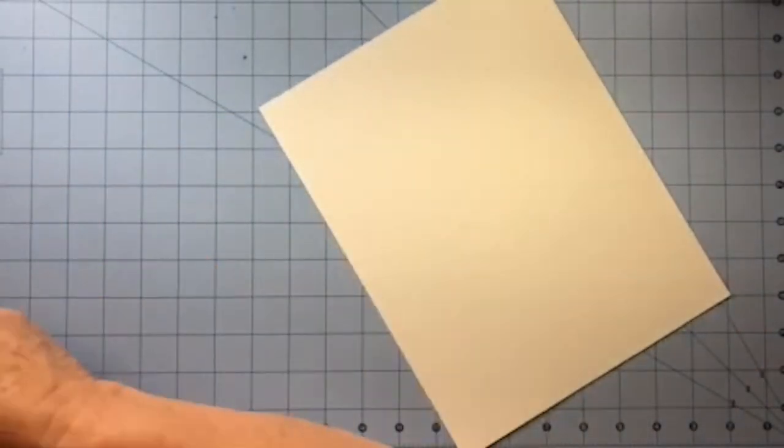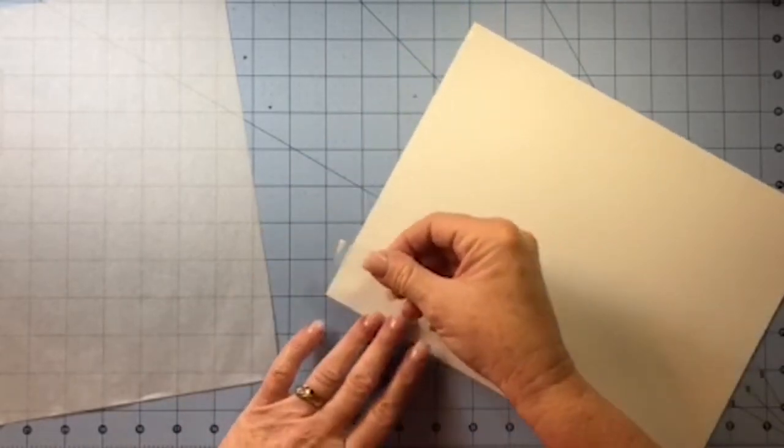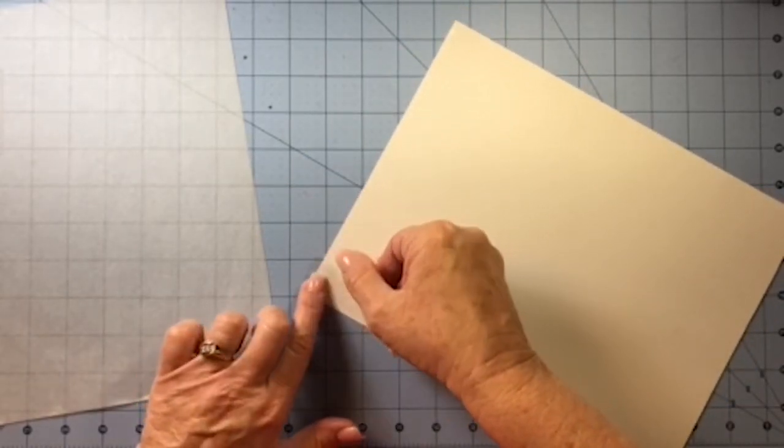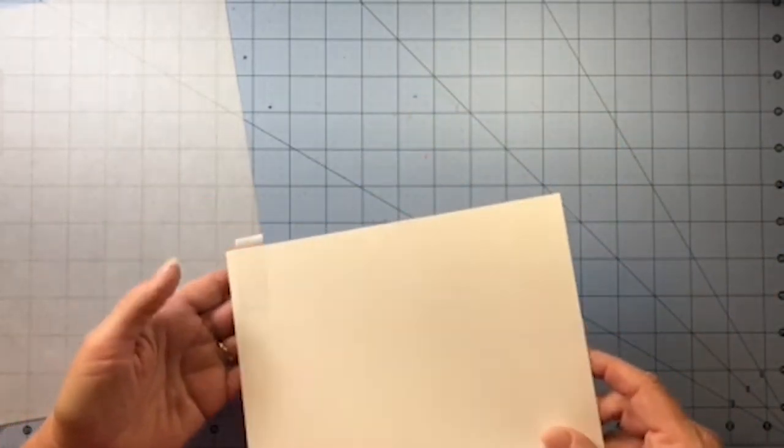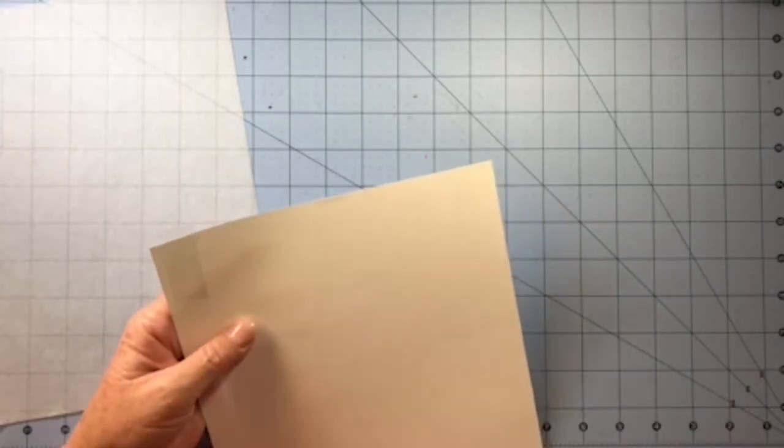So you have your cardstock, you have your tracing paper, and you've got your tape. I'm going to put a piece of tape so that about a quarter of an inch of the tape is sticking up over the top edge of my cardstock.